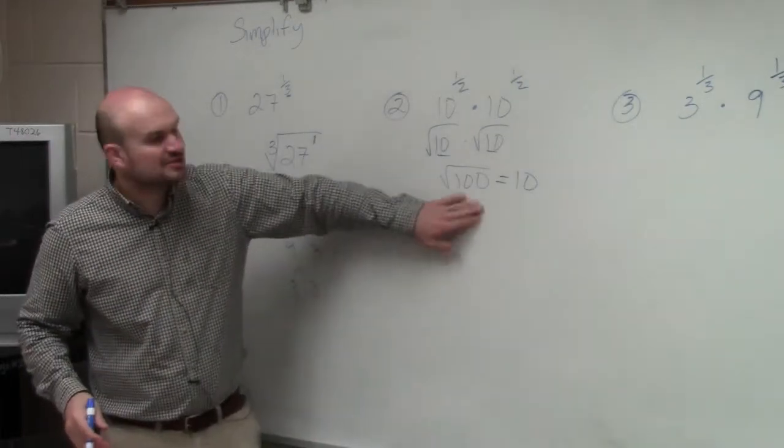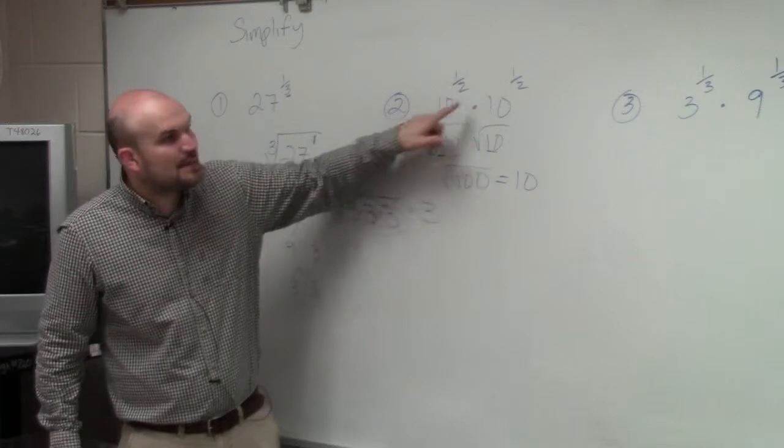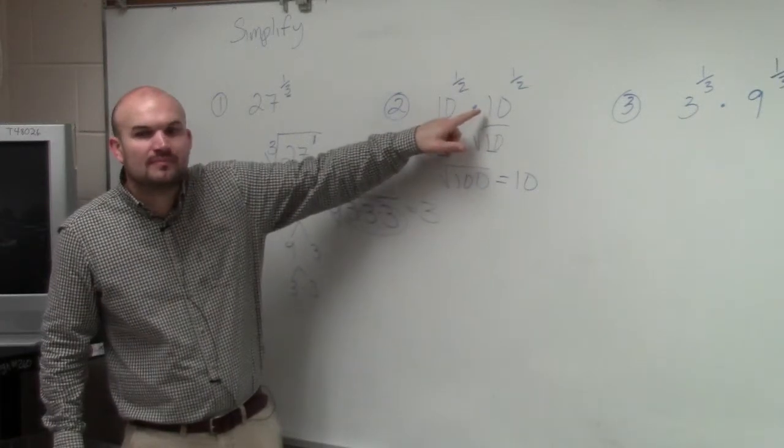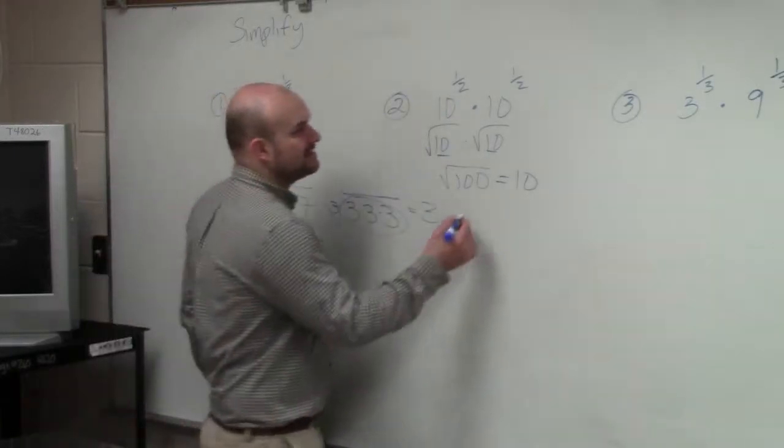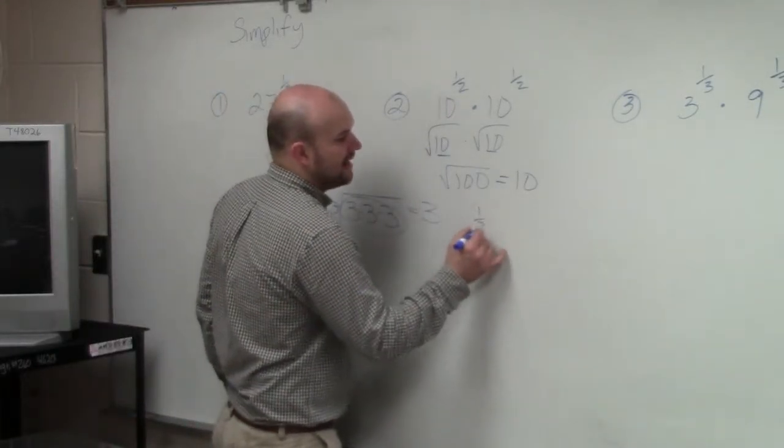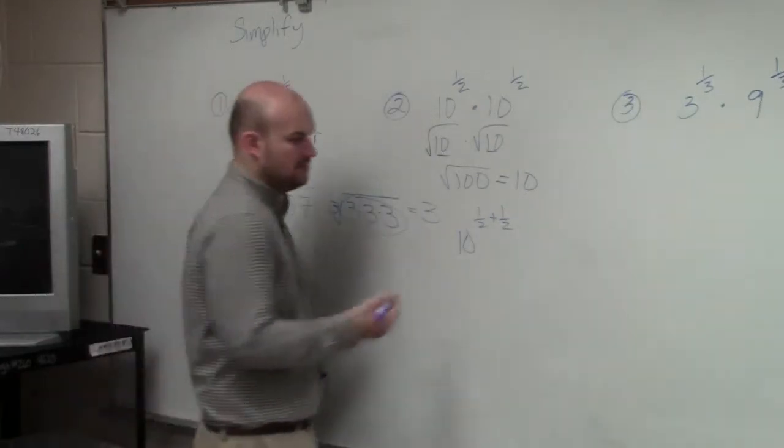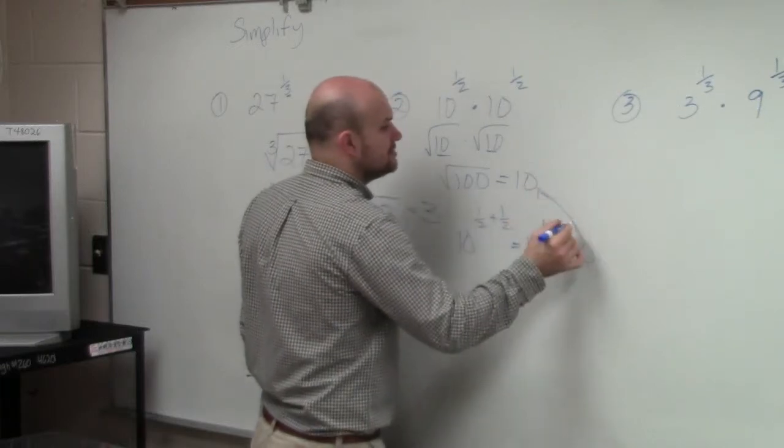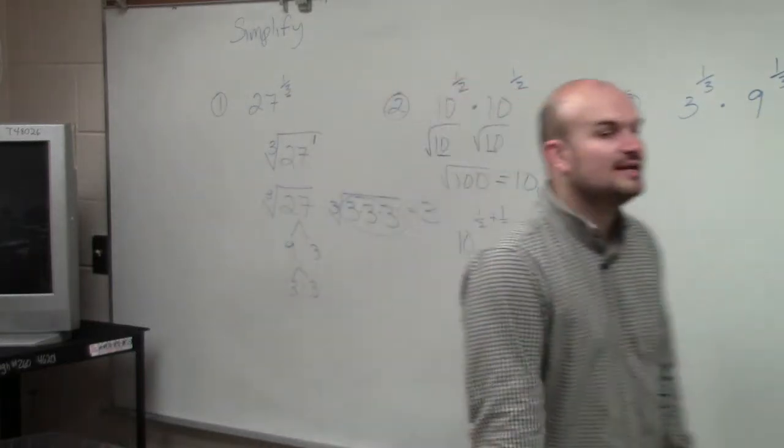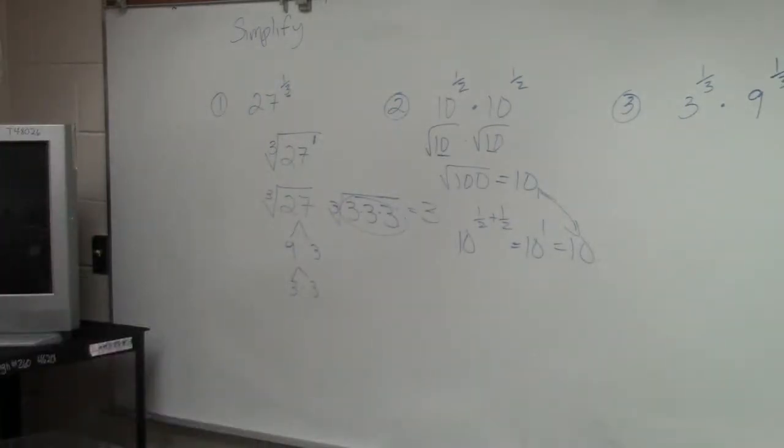The other way to do this, ladies and gentlemen, is applying the rules of exponents. Since these have the same base, what do we do with the exponents? Add them. So I could say this is the same thing as 10 to the 1 half plus 1 half. What's 1 half plus 1 half? So you guys can see there's two different ways to solve this, and we're going to get the exact same answer.